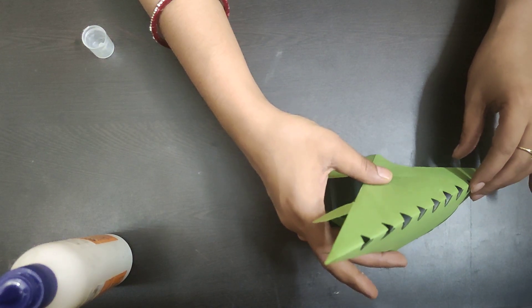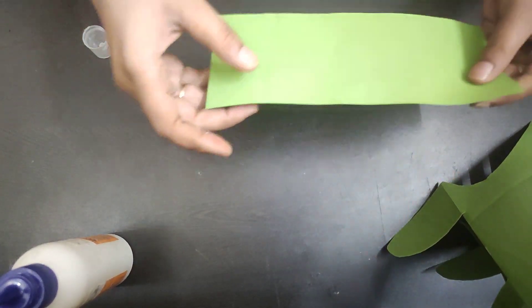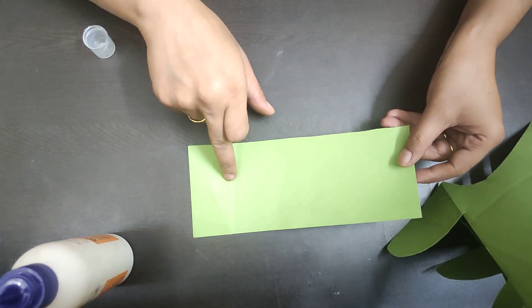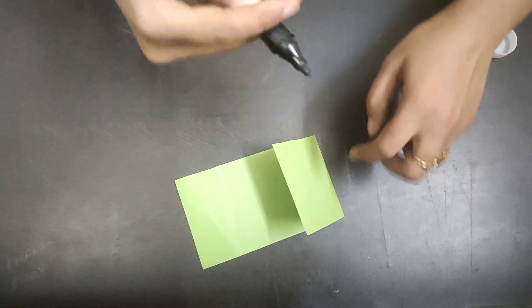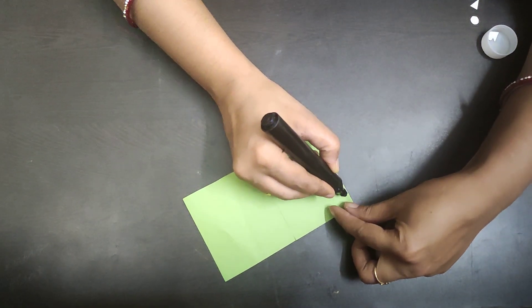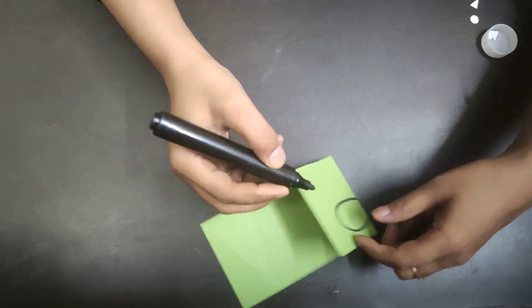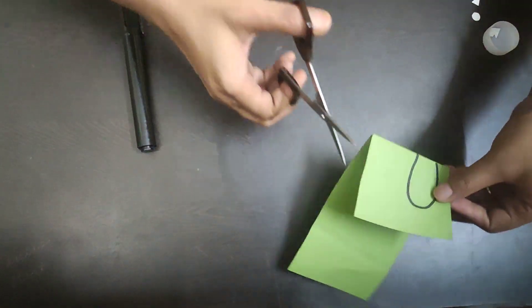Now we have to make the face of the dinosaur. Take this remaining part to make the face. Fold this sheet into two halves and make an oval shape like this. Take the scissor and cut this part.